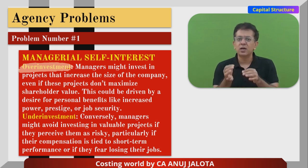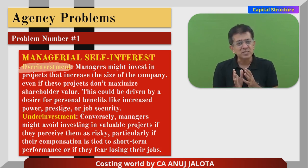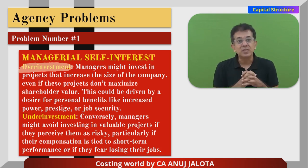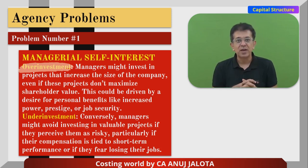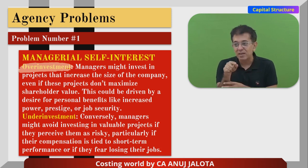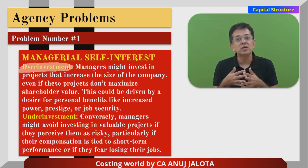For example, a company currently getting an IRR of 10% — managers might find funds available that will give an IRR of only 4%, but still undertake these projects even though the cost of capital is higher. Managers think: let's not keep any funds idle, let's keep doing businesses, at least returns will keep coming. This could be driven by a desire for personal benefits like increased power, prestige, or job security — getting a percentage from the new business added to their salary or bonus.